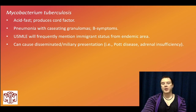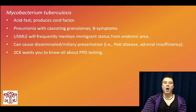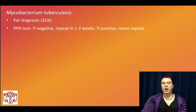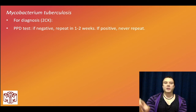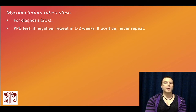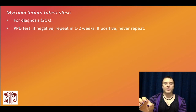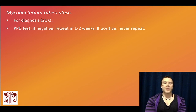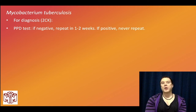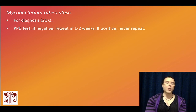2CK wants you to know all about PPD testing. The first test to diagnose TB is the PPD skin test (Mantoux test) — it's a type 4 hypersensitivity, a T cell response. If the PPD test is negative, repeat in 1–2 weeks; if positive, we never repeat. Increased susceptibility to tuberculosis can occur in patients who have IL-12 receptor deficiency or IFN-gamma receptor deficiency — that's on the NBME exams.